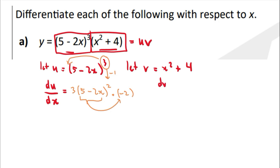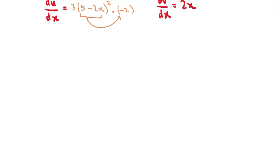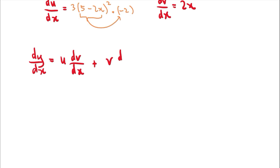dv/dx simply equals 2x. Now that we have u, du/dx, v, and dv/dx, we can apply the product rule. The product rule states that dy/dx equals u multiplied by dv/dx, plus v multiplied by du/dx. That's all.